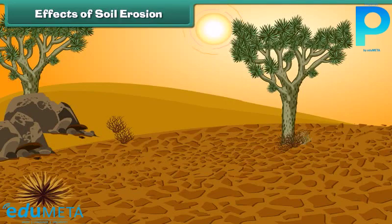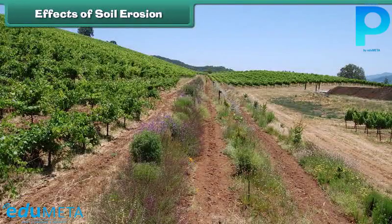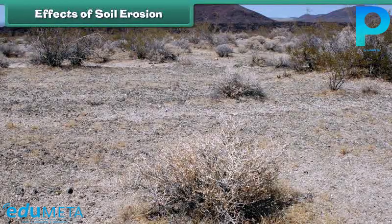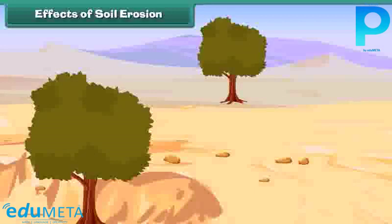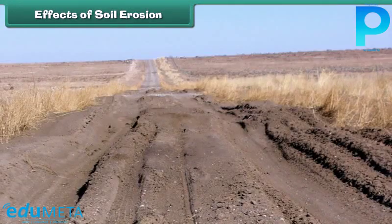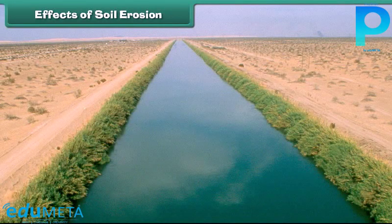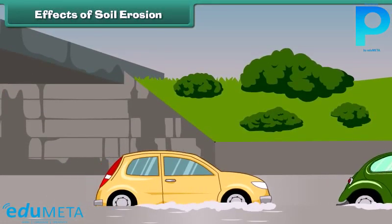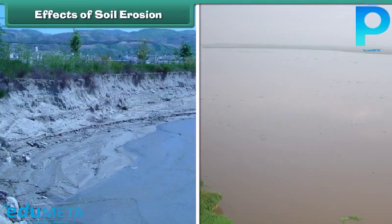Reduced soil moisture results in drought conditions. Decreased soil fertility leads to a decrease in the quality and quantity of crops. Soil erosion affects natural vegetation badly, which leads to the transfer of fertile land into desert. Due to soil erosion, soil shifts and accumulates on roads and streets, blocking traffic and causing accidents. It also blocks many irrigation canals and increases the risk of flooding.